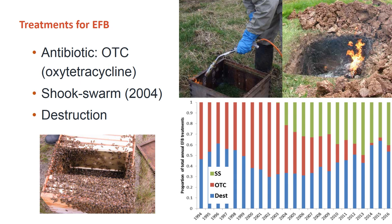As you can see from the bar chart, how EFB has been treated in the UK has changed over time, with OTC and destruction being used from the mid-1990s until 2004, when shook swarm was introduced as a treatment. OTC is best avoided as there is resistance of the EFB bacterium to OTC — when it is used routinely, selection for resistant strains of the bacterium occurs.